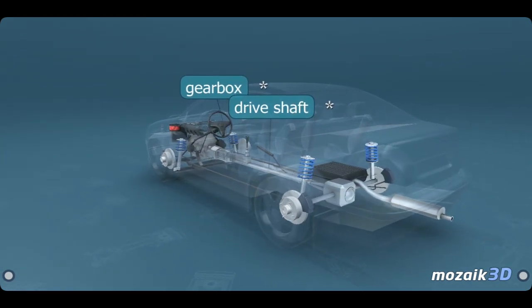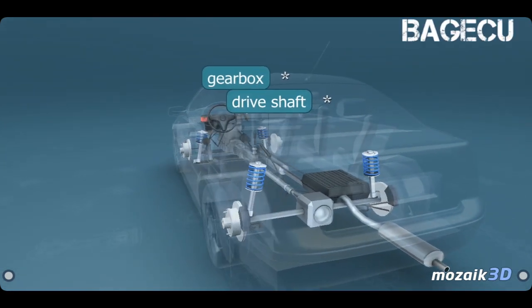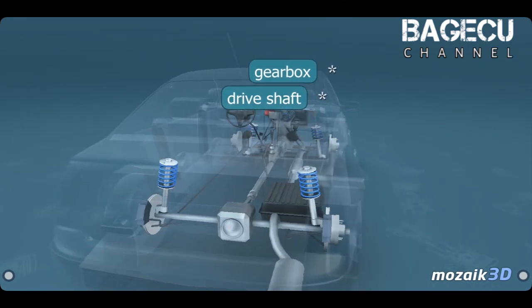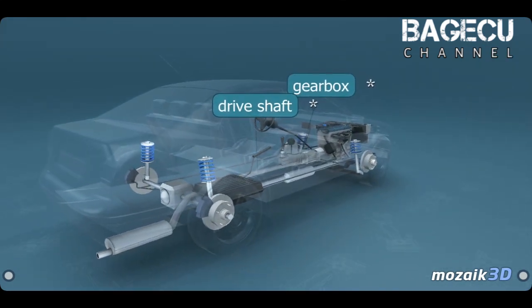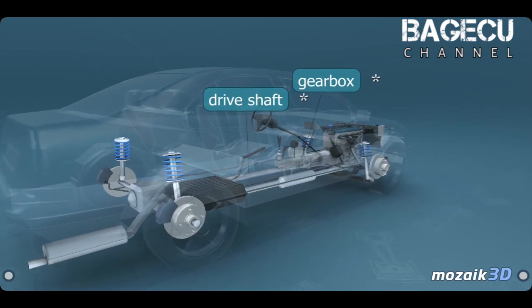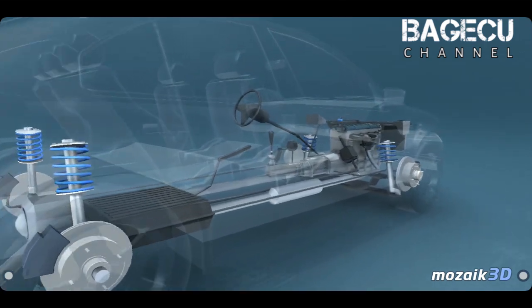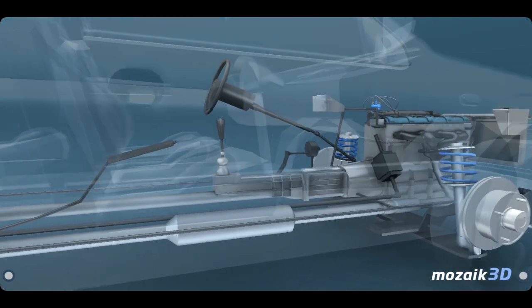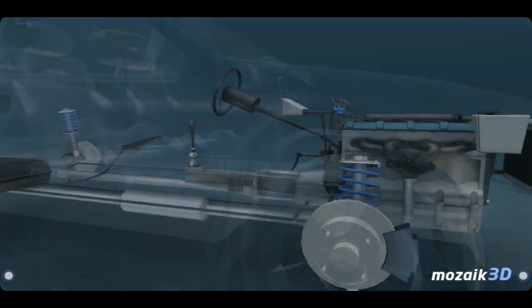The gearbox changes the number of rotations of the driven wheels during one turn of the crankshaft. In low gear, the output of the engine is high, but the speed is low. In high gear, the car is faster and uses less fuel, but accelerates more slowly.